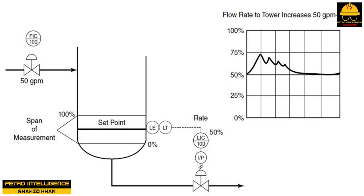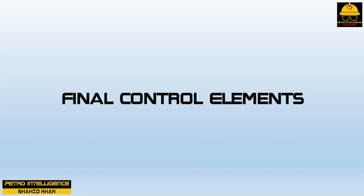Rate (derivative) mode enhances controller output by increasing the output in relationship to the changing process variable. As the process variable approaches the set point, the rate relaxes, providing a braking action that prevents overshooting the set point. The rate responds aggressively to rapid changes and passively to smaller changes in the process variable.